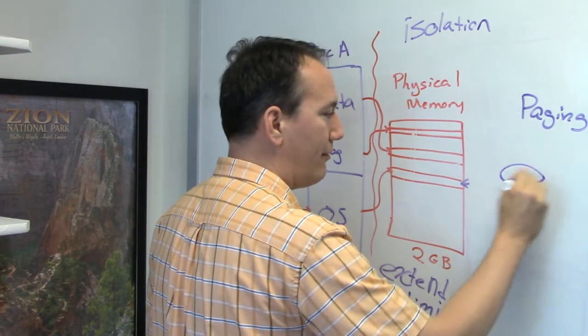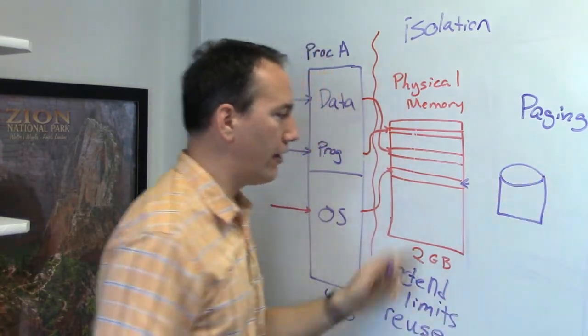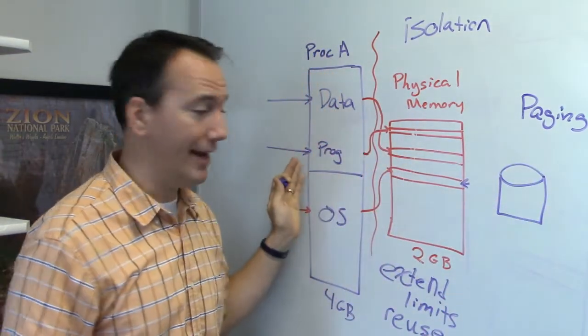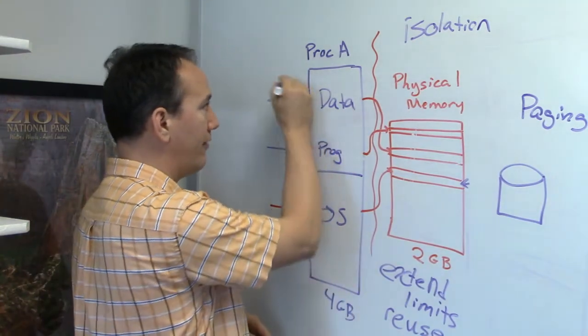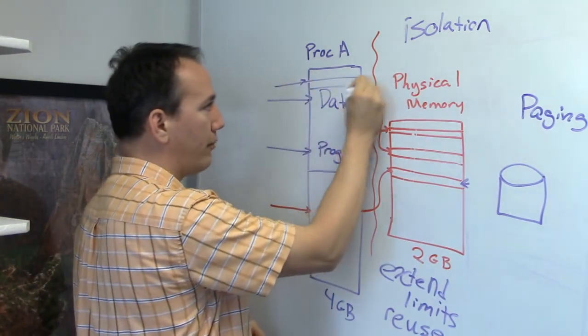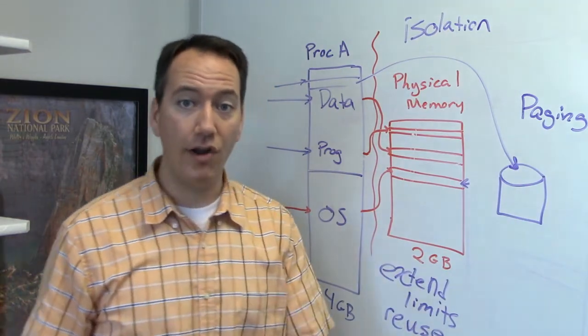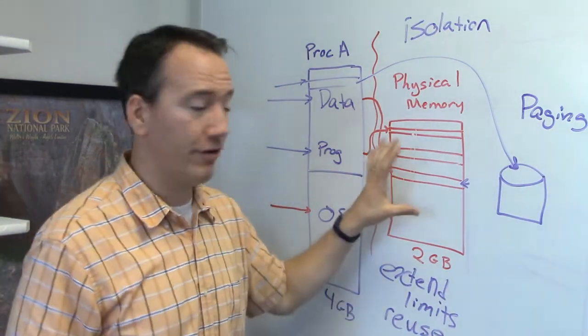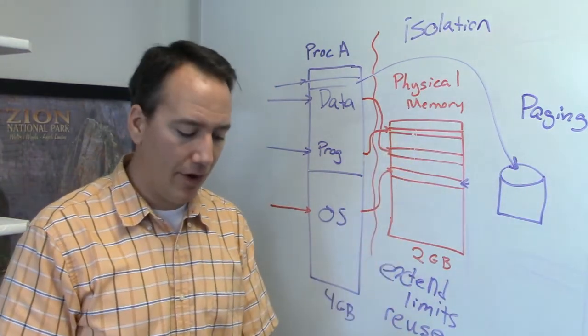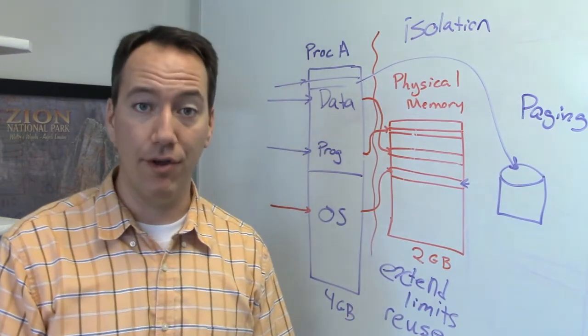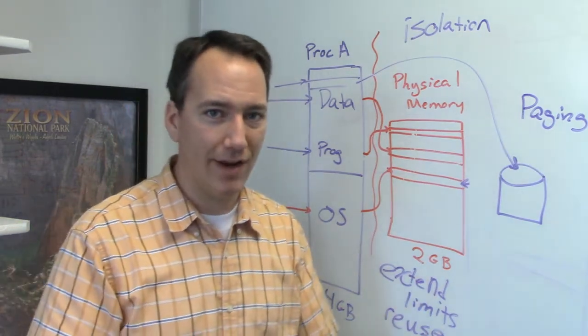Well, the nice thing about paging is if you don't have enough memory for all of your program's needs, you could also have certain parts of memory correspond to a file on disk. So your hard disk becomes an extension of your physical RAM. Now you may have noticed on a computer, especially an old computer, if you have a lot of programs running at the same time, the hard disk starts to go.